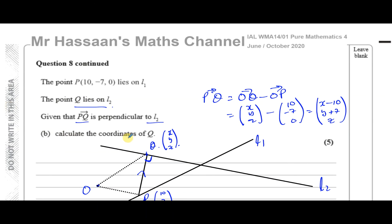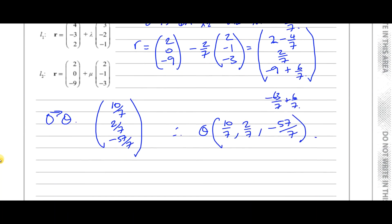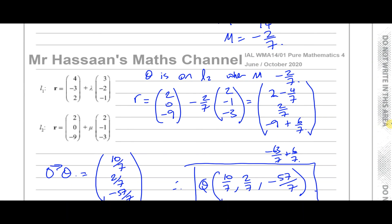Those are the coordinates of Q — that's what they asked for. If they had asked for the position vector we would have left it in vector form, but since they asked for coordinates, that is our final answer. Other questions on vectors can be found in the playlist, and other questions on this paper are also linked. Thank you for watching and see you soon.